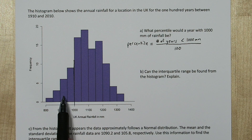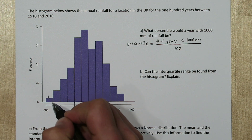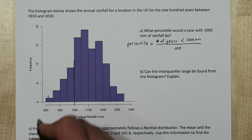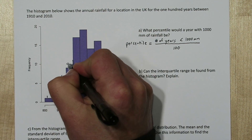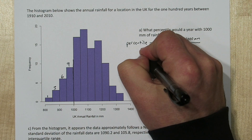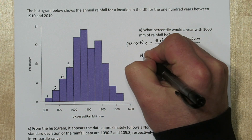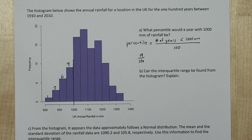These bars all represent rainfall of less than a thousand millimeters. This first one has a frequency of one and a frequency of three for the next, then six, and then nine. So if we add all that together, we get 19 out of the hundred years had rainfall of less than a thousand millimeters.